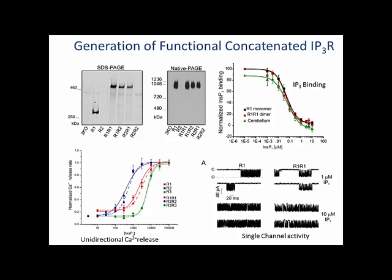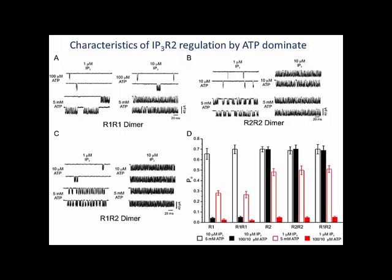We next generated and expressed dimers consisting of one R1 and one R2 subunit, which must result in tetramers of equal numbers of individual subunits, and used these defined receptors to study regulation of single-channel activity by ATP. The single-channel activity of the R1-R1 and R2-R2 dimers were identical to channels expressed from their parent monomer subtypes. For example, the R1-R1 dimeric channel activity was enhanced by increasing ATP at both low and saturating IP3, whereas the R2-R2 channel activity was only altered by ATP at low IP3 concentrations, entirely consistent with the earlier calcium release data.